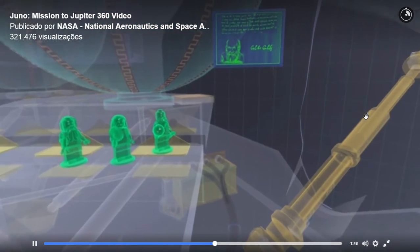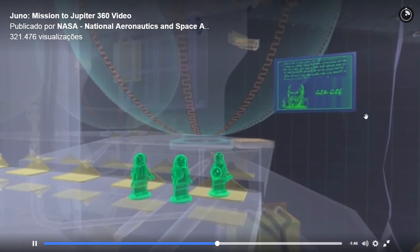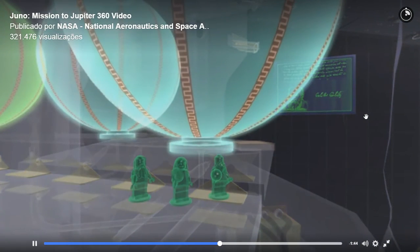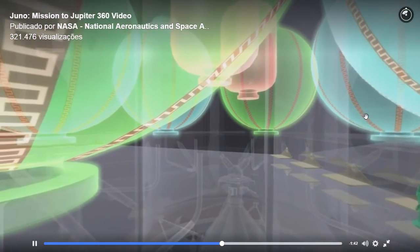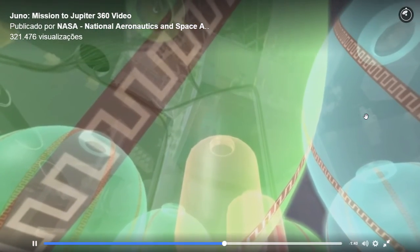Now you're inside the X-ray view of Juno. Look for the round, blue and green tanks. They hold rocket fuel to help Juno adjust course when needed.